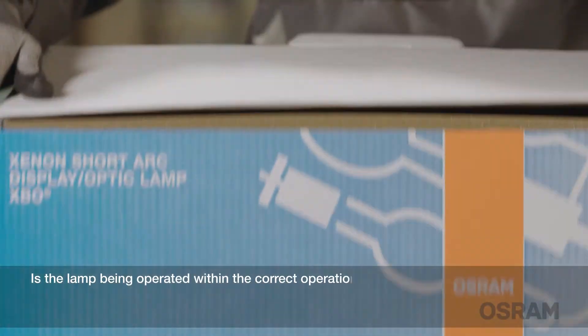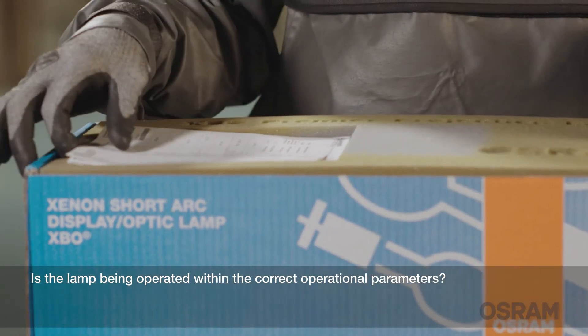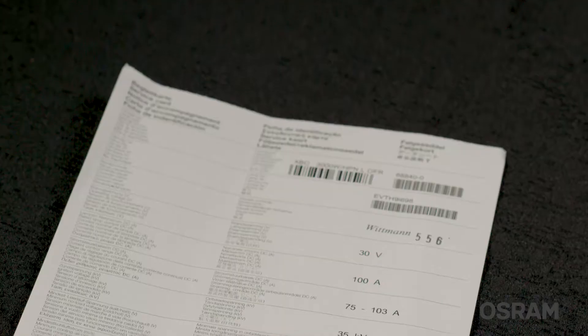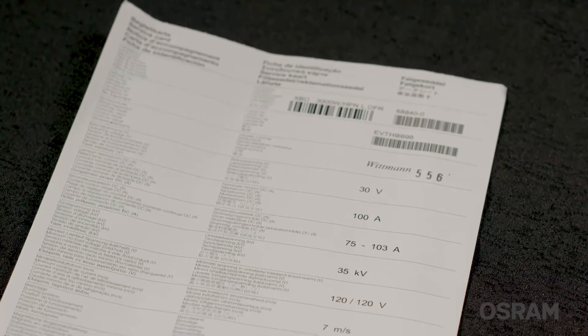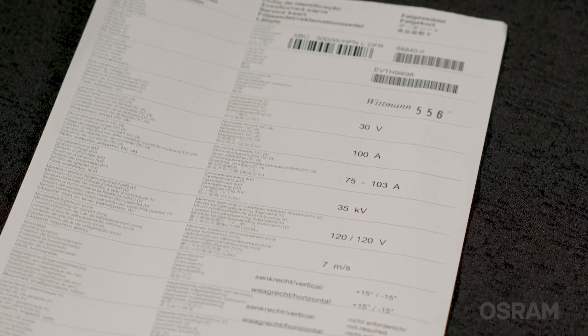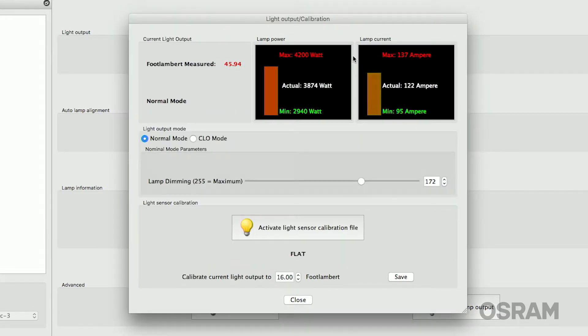Is the lamp being operated with the correct operational parameters? You will need to refer to the service card inside the lamp box or online for this information. Barco and Christie operators can use the information as a reference while viewing the current and wattage readings from the projector software.